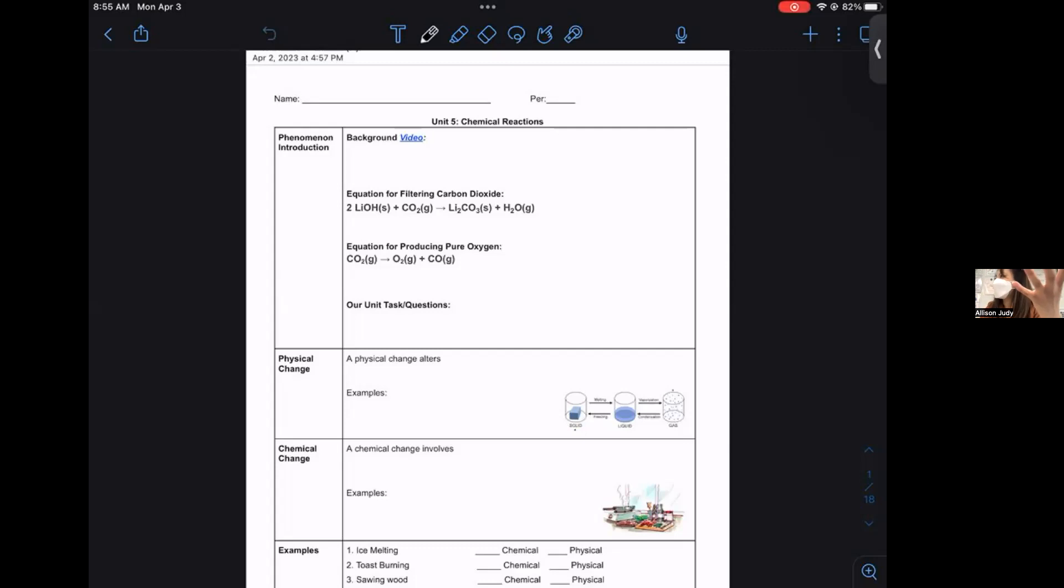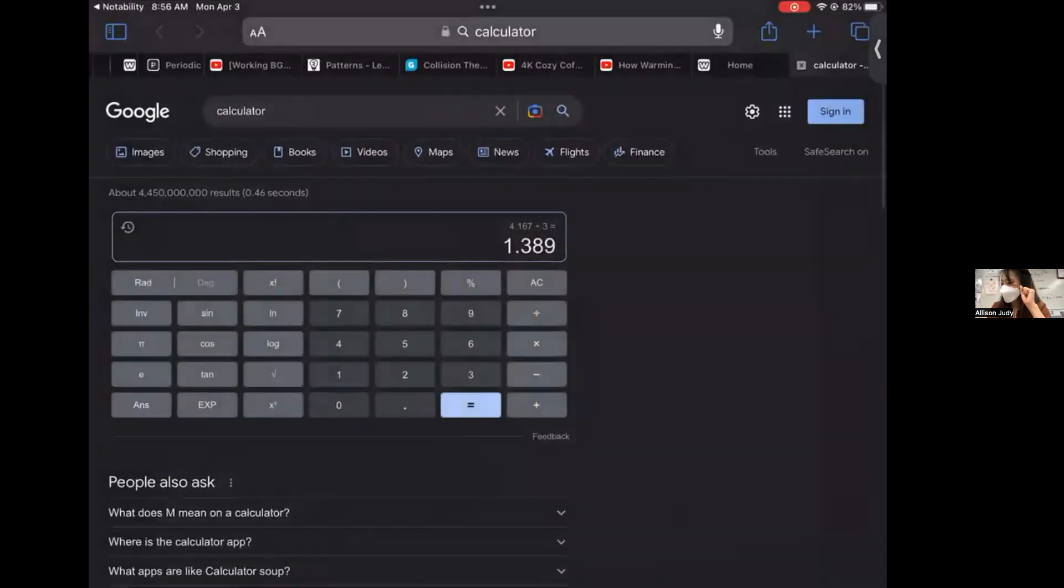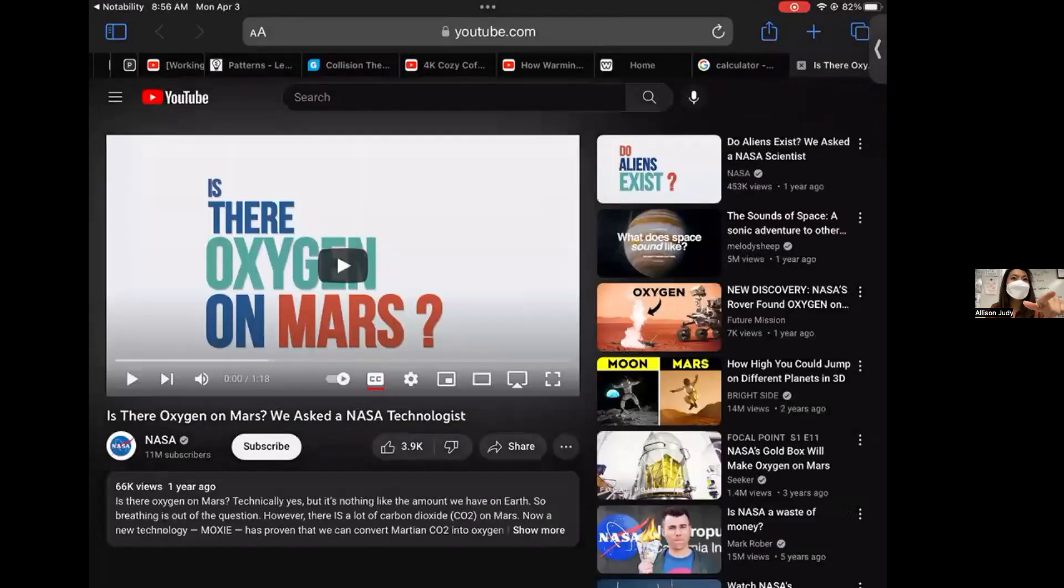In order to get a bigger picture on what this looks like, we're going to quickly introduce our new phenomenon, which has to do with NASA, to get us into thinking about what is a chemical reaction, how do I know when that's happening, and what types exist out there. I'm going to have you guys watch this really quick background video. I want you guys just to listen the first time. It's only a minute and 18 seconds. No one needs to take any notes right now, we're just listening.